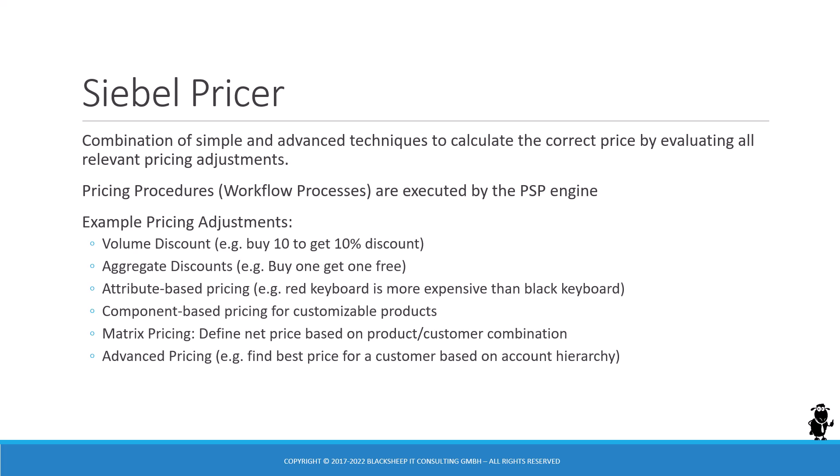In the course we focus on all these possible pricing adjustments. You will learn about volume discounts — like buy 10 items and get a 10% discount on the whole order — aggregate discounts such as buy one get one free, attribute-based pricing where for example the color of a keyboard makes it more expensive than the default, component-based pricing for customizable products, and matrix pricing where you can define the net price based on a combination of product and customer attributes. The final chapter covers advanced pricing, for example how to find the best price for a customer who is part of an account hierarchy.